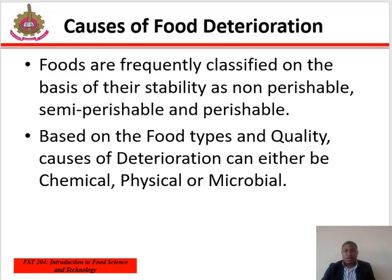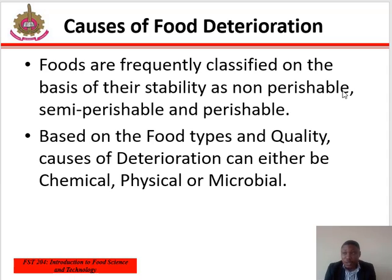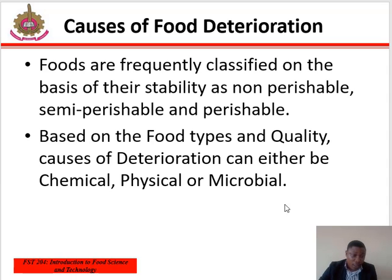Foods are frequently classified on the basis of their stability as non-perishable, semi-perishable, and perishable. They are also classified based on food types and quality. Causes of food deterioration can either be chemical, physical, or microbial.